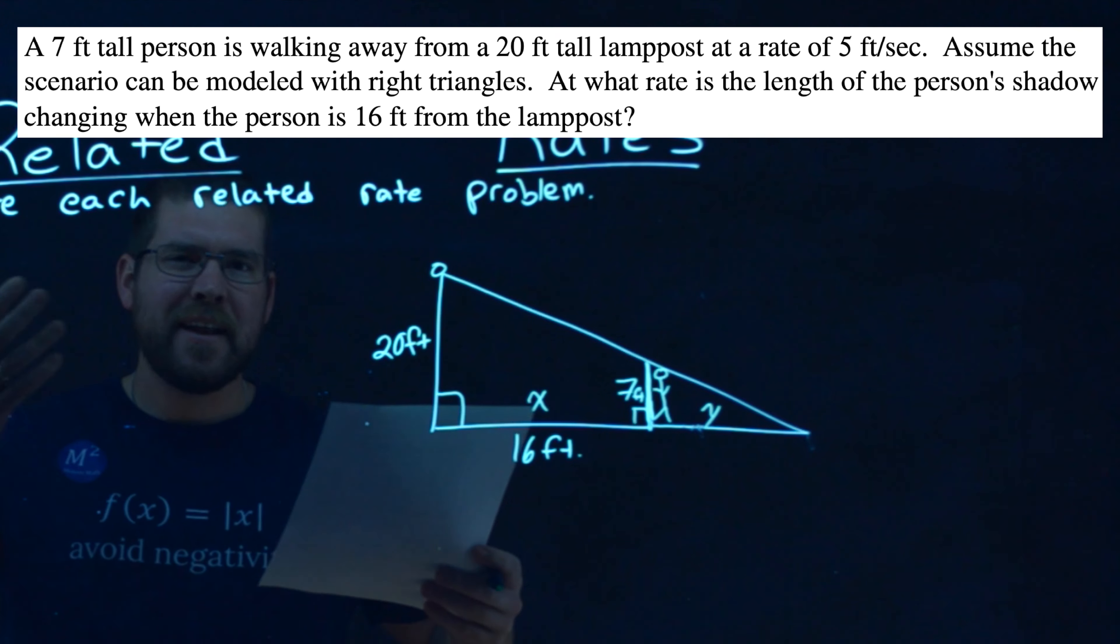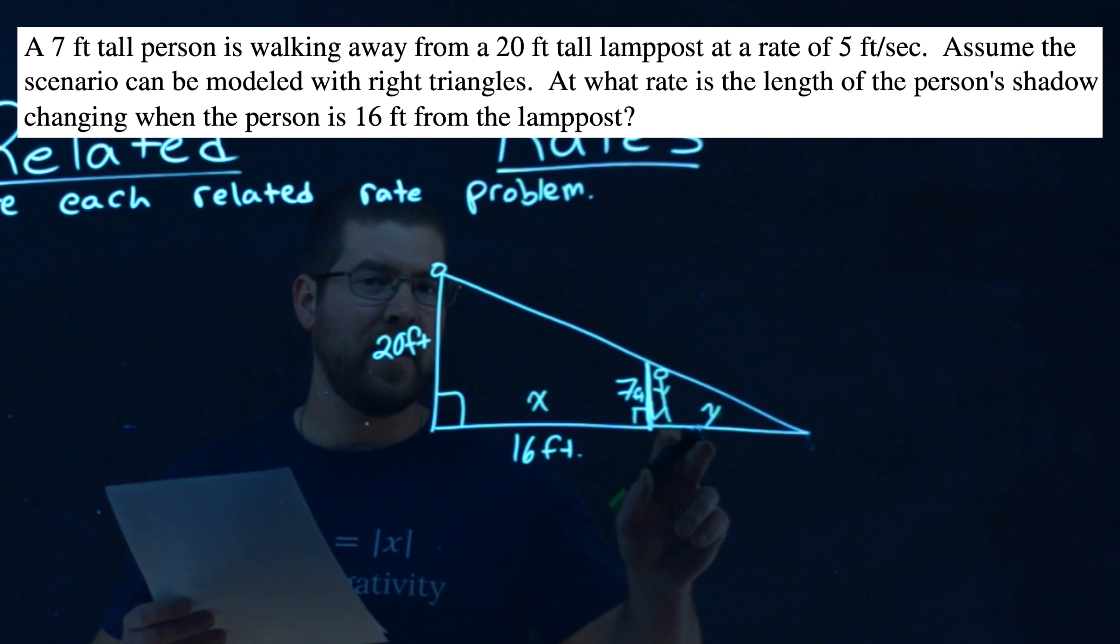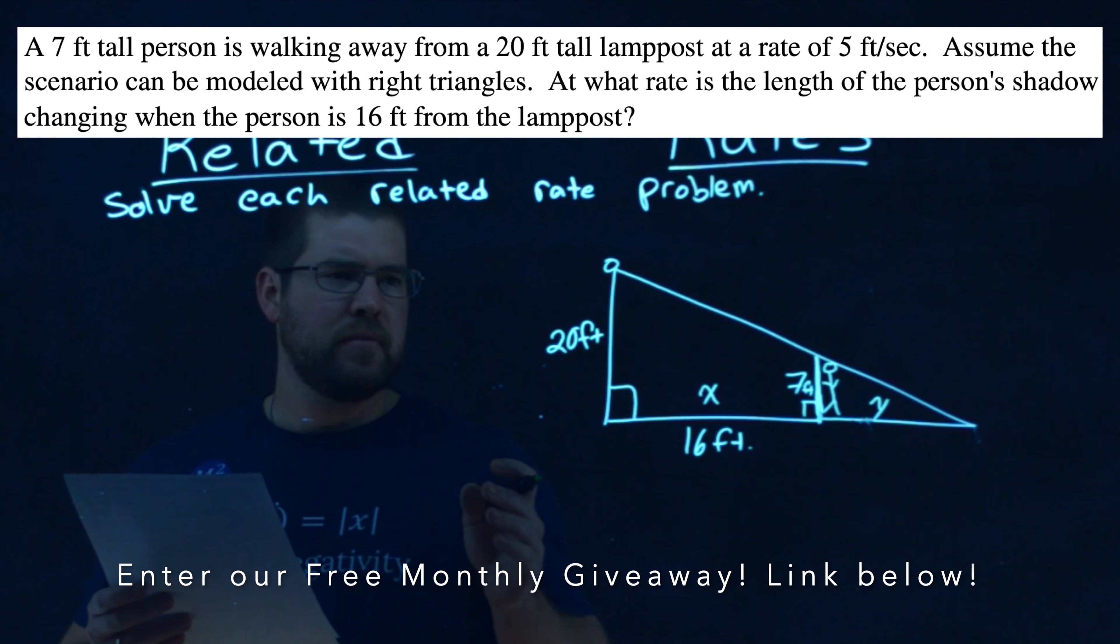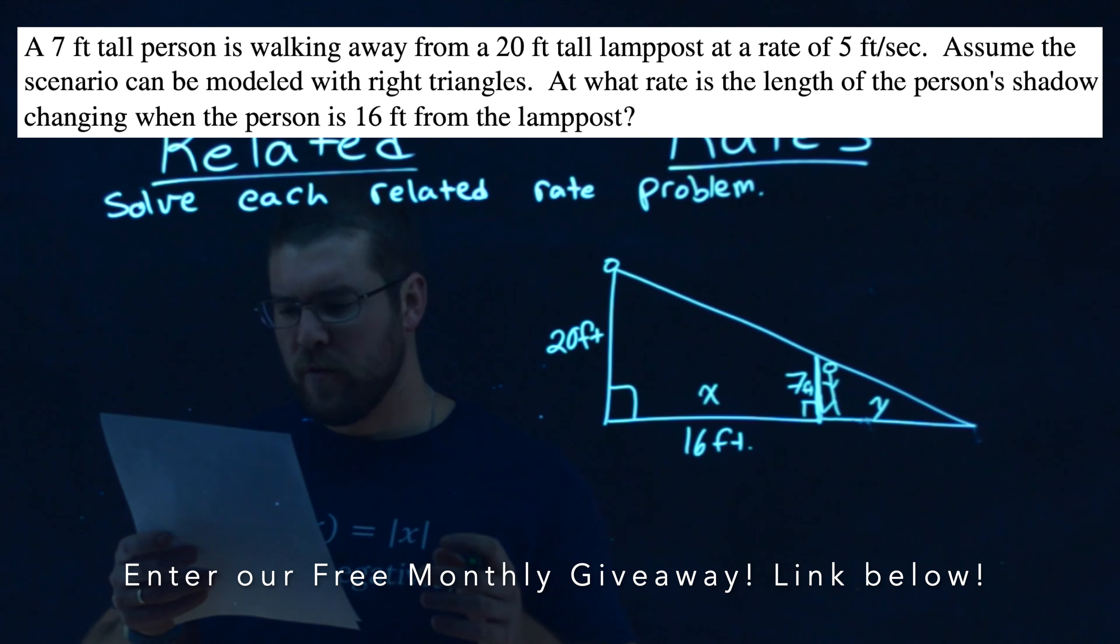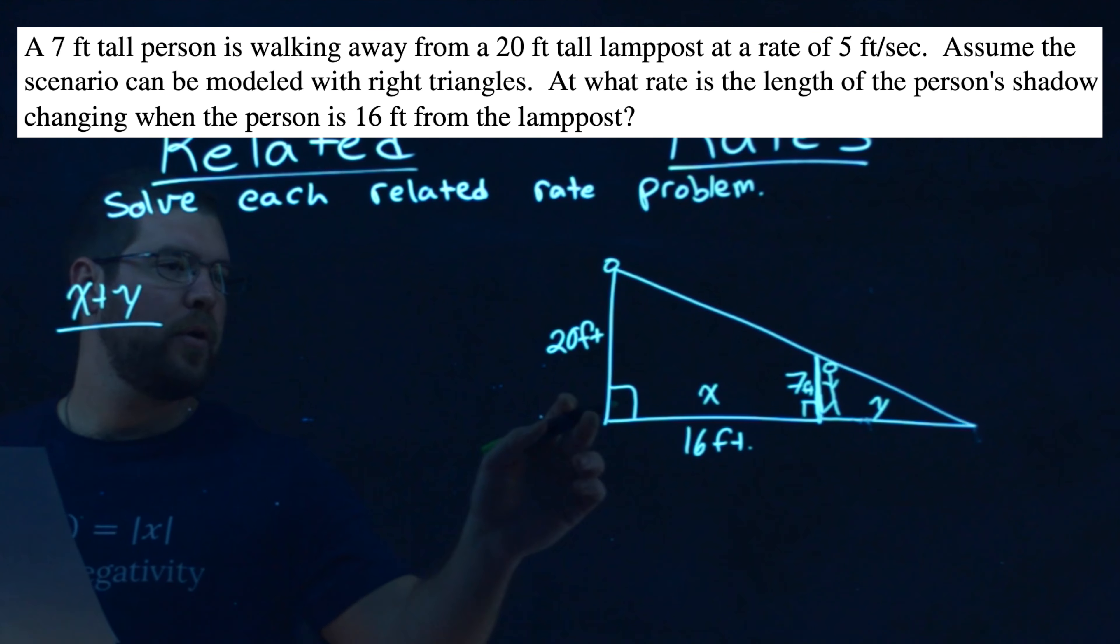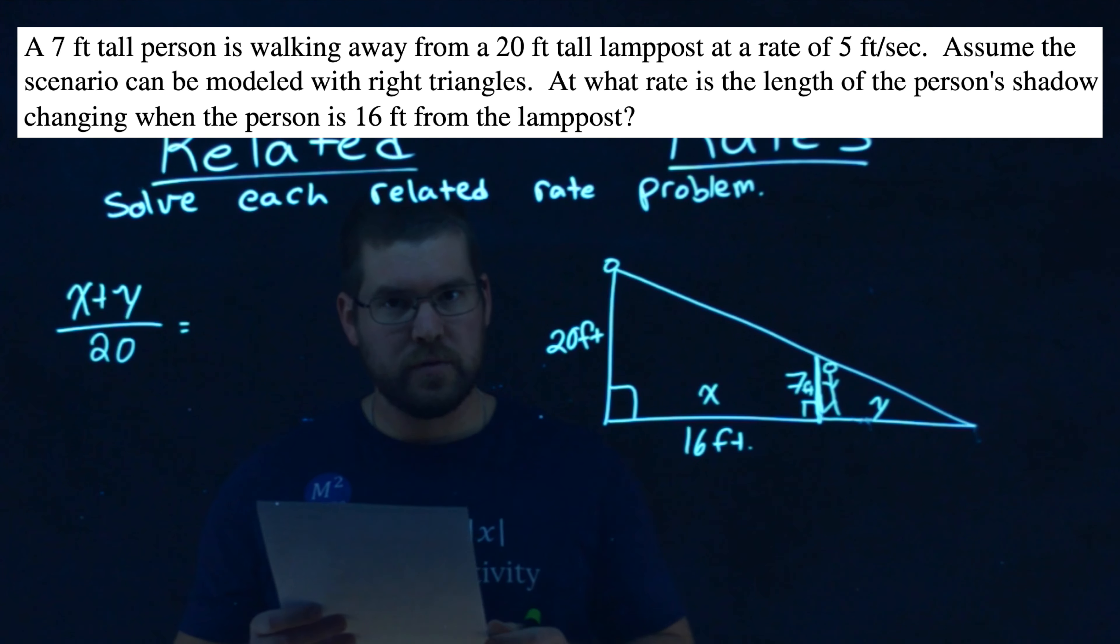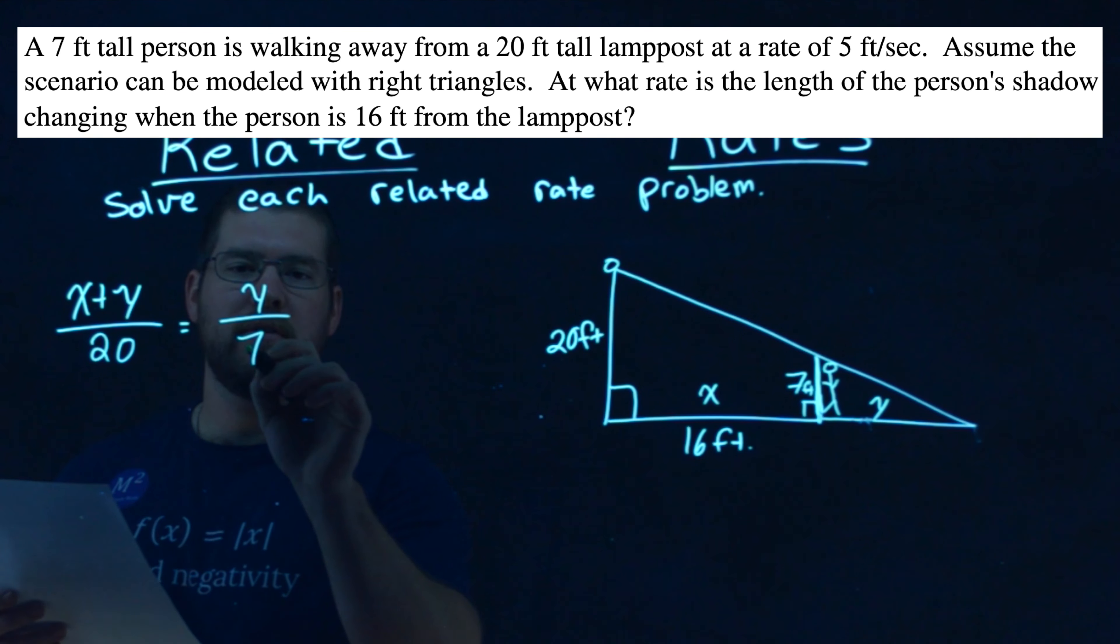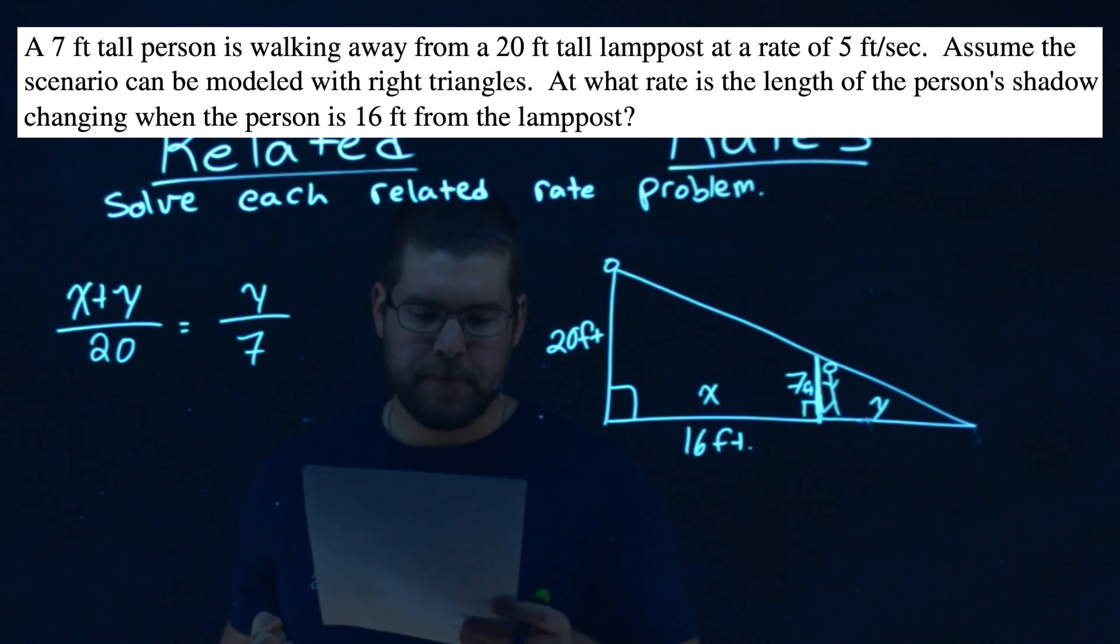So what do we know, how we can get a formula out of this that connects everything that we need? Because we want to find that y value. Well, right triangles, we know that they're similar right triangles, they're proportionate. So if I take the length x plus y, and I put it over the other leg of the right triangle, 20, that should be equal to the length of y, similar side, over the height of 7 feet for that person. And we actually have an equation right here.